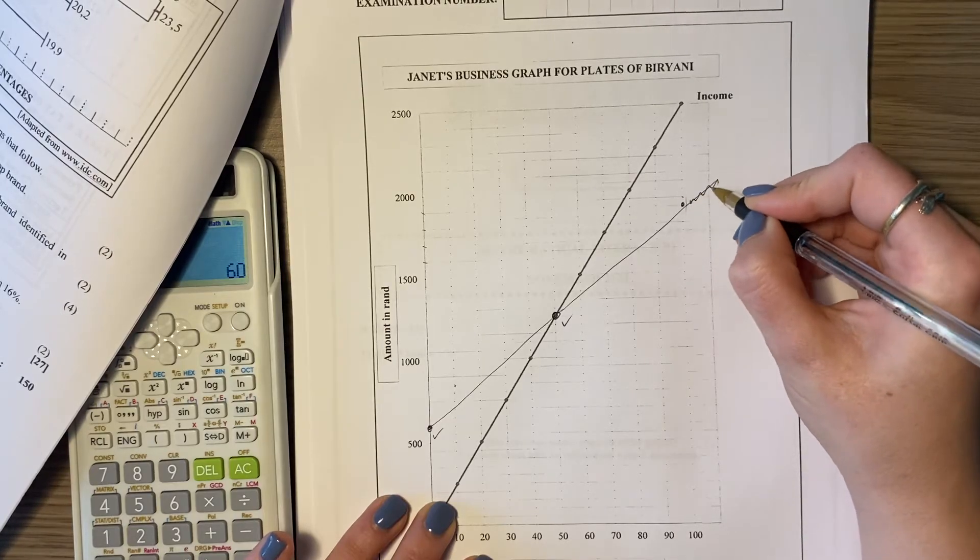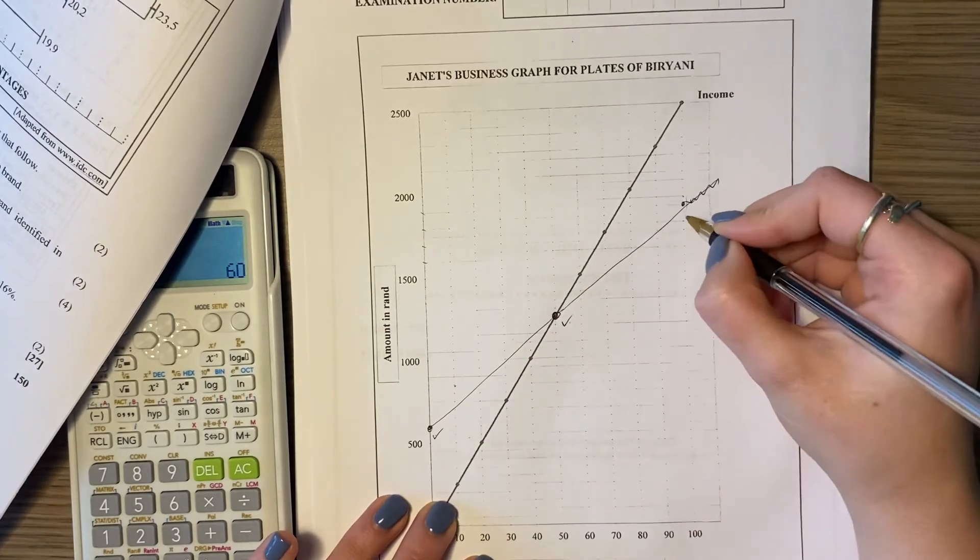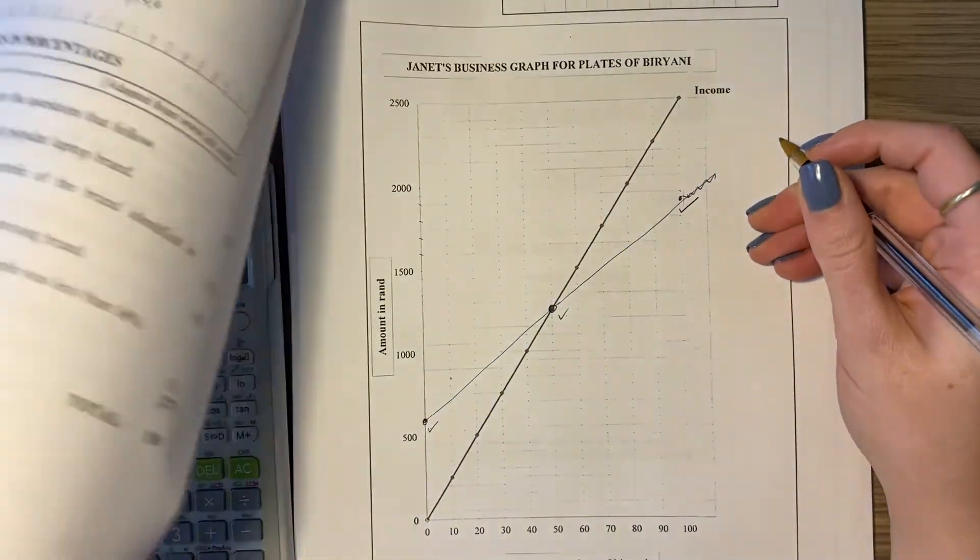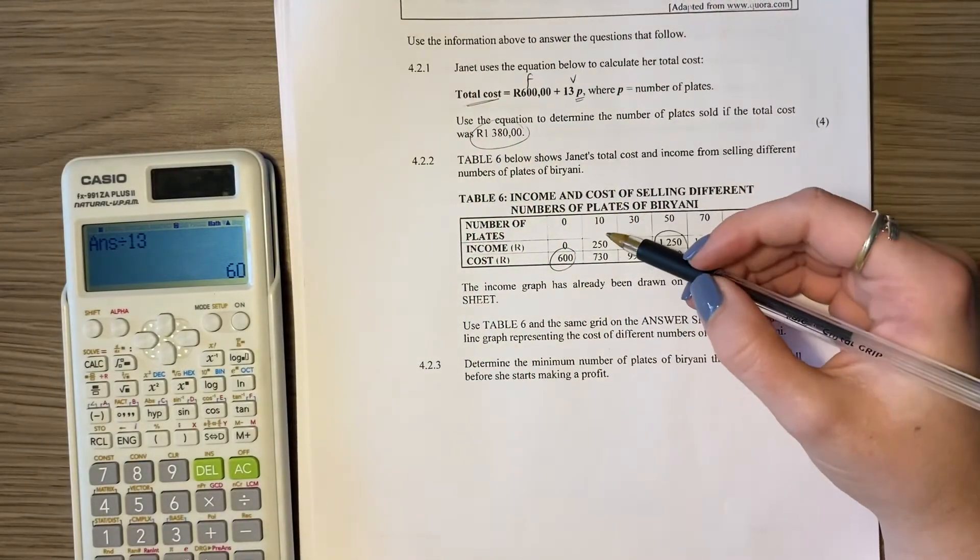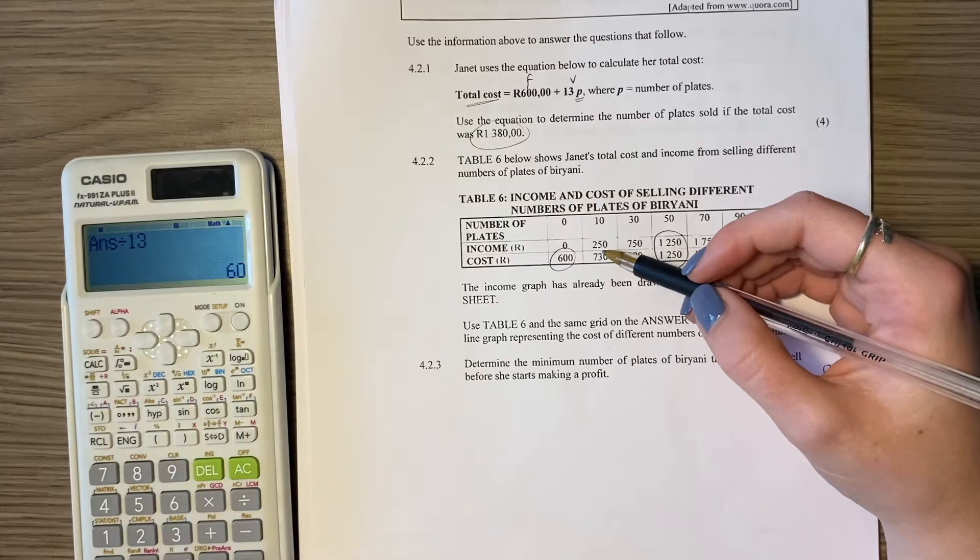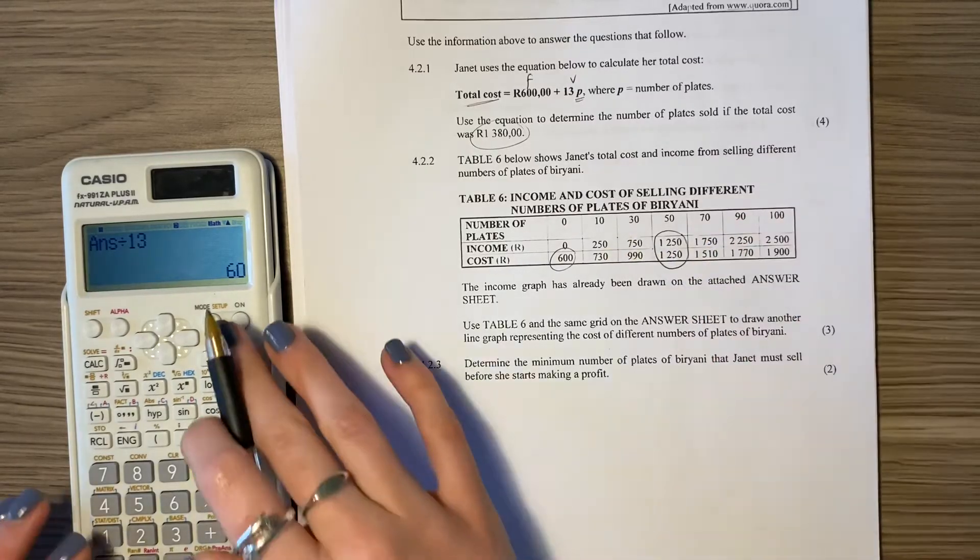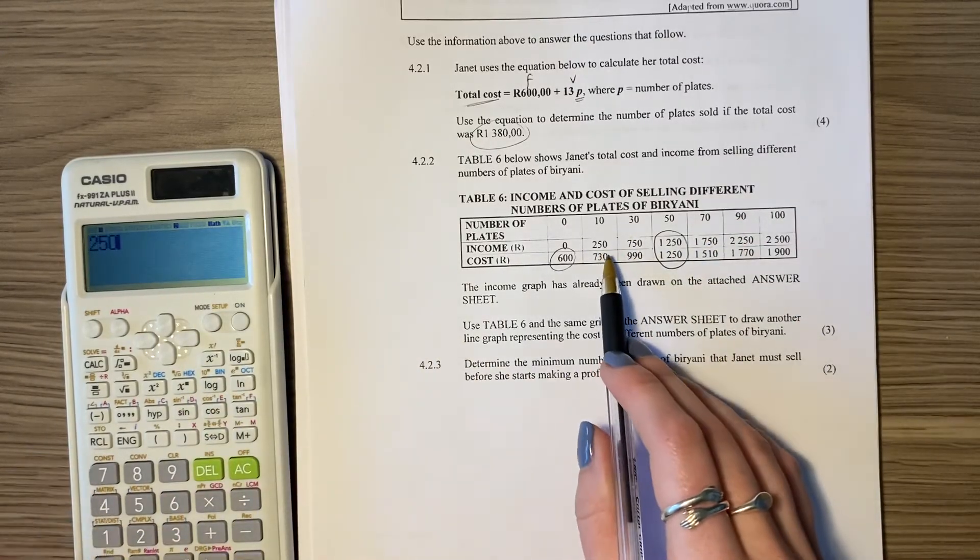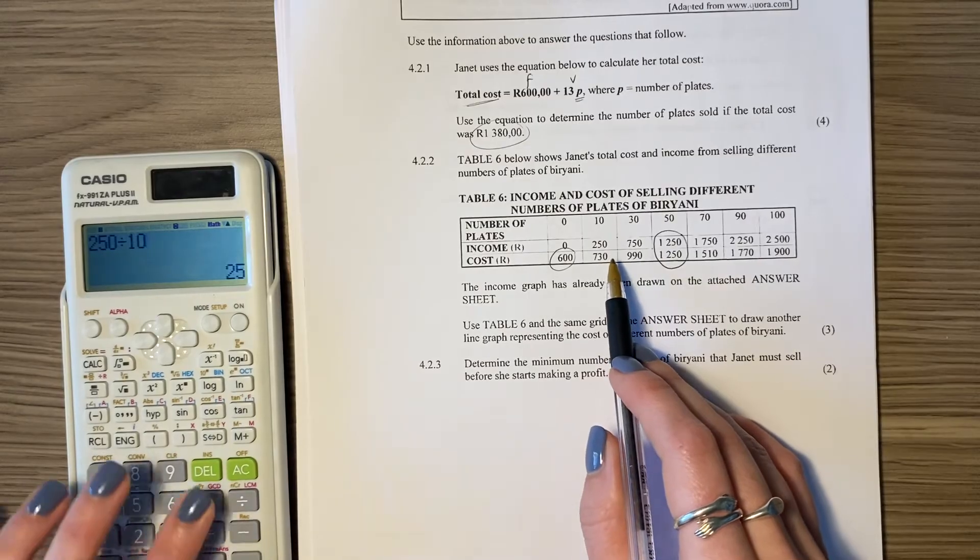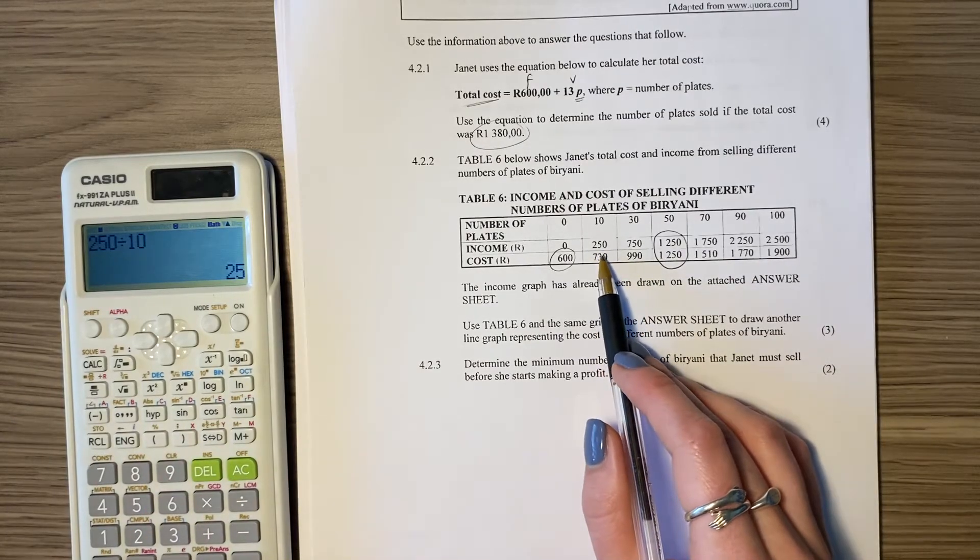And you'll get a mark there, a mark there, and a mark there. Out of interest, how much is she selling each briyani for? Well, she's selling each briyani for 25 rand. So if we say 250 for 10, how much would it be for one? She's selling each briyani for 25 rand.